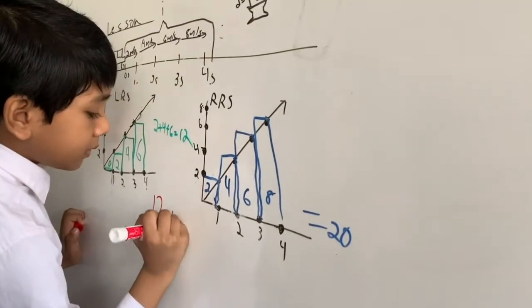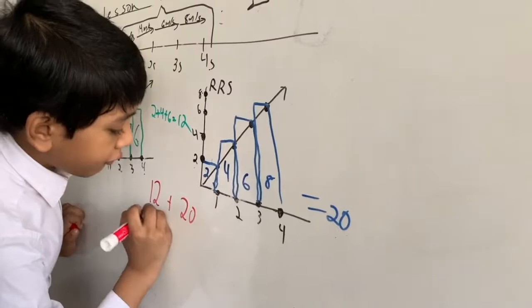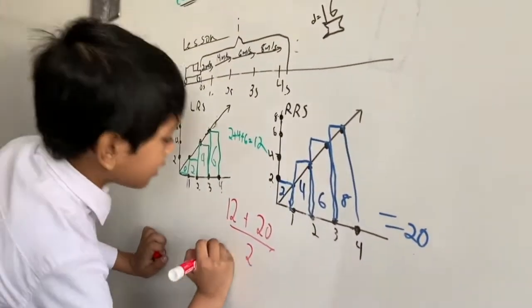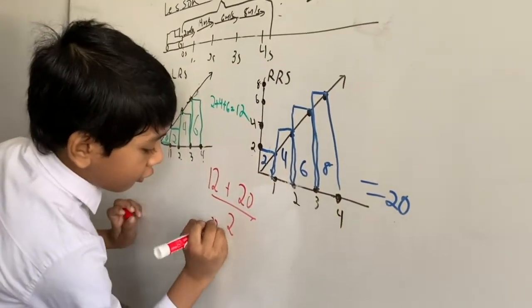Left and right Riemann sum, then I'll find the average of those two, so get 12 plus 20 over 2, so we've already got them.